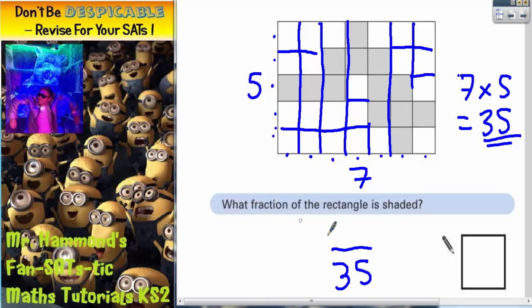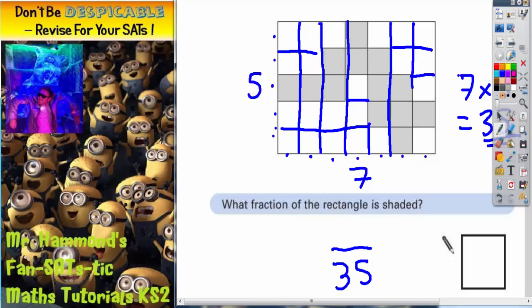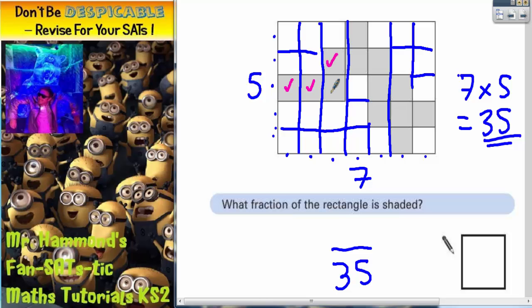But we want to know what fraction is shaded. So now the question is how many of them are shaded. Well, the shaded ones, we have got one, two, three, four, five, six, seven, eight, nine, ten, eleven, twelve, thirteen. So 13 squares are shaded out of a possible 35. So the final answer that you need to put in this box is 13 out of 35.